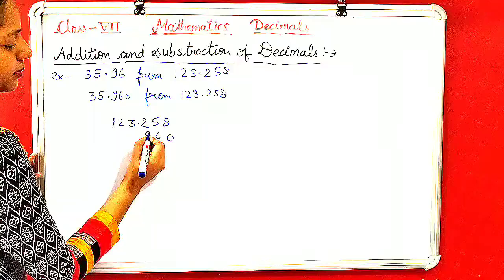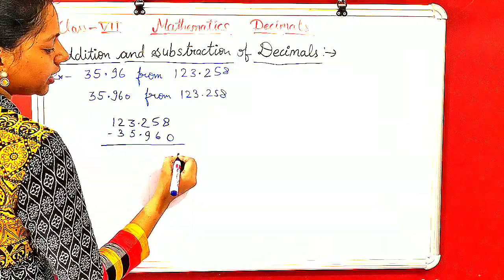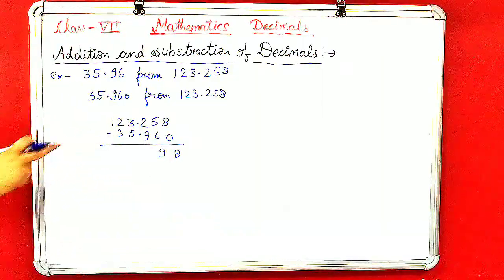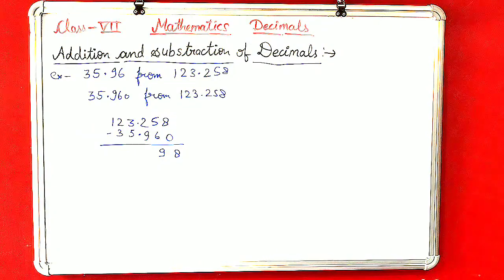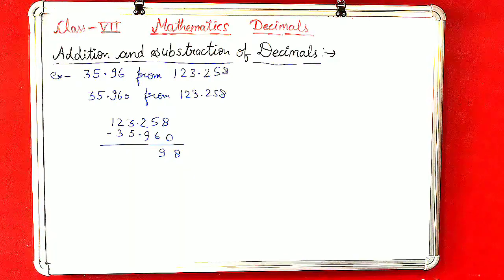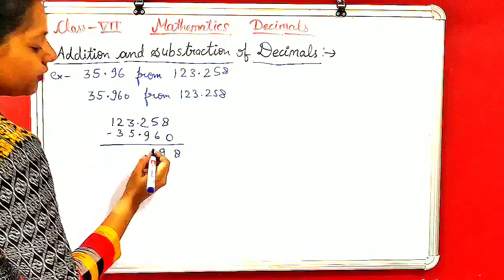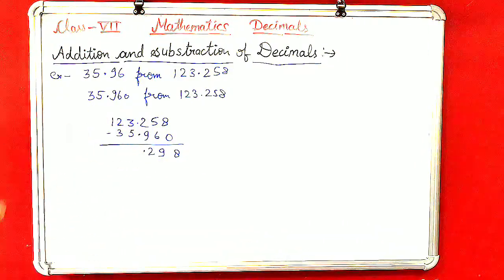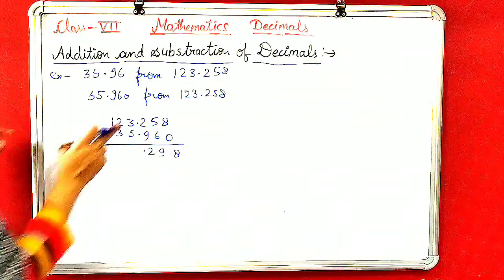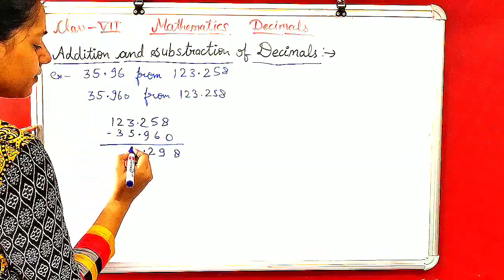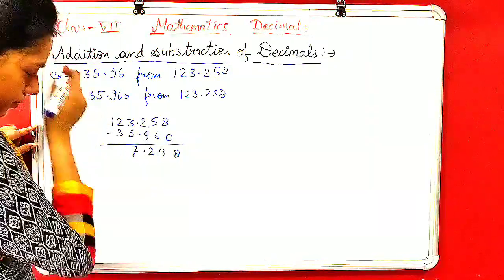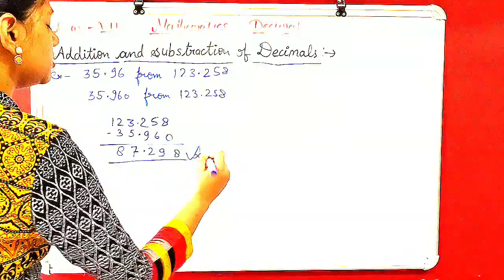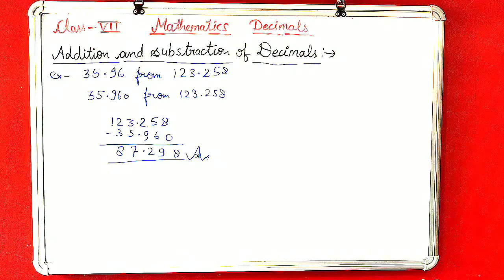Now subtract 35.96 from 123.258. Start from right: eight minus zero is eight. Five needs to borrow, becomes fifteen minus six equals nine. Carry one, so eleven minus nine equals two. Place the decimal point. Two needs to borrow, becomes twelve minus five equals seven. Continue: three minus three equals zero, then eight. The answer is 87.298.